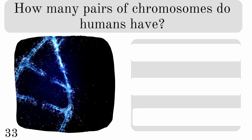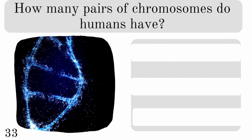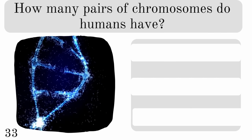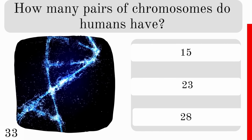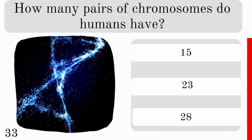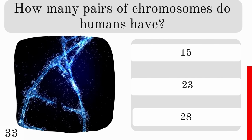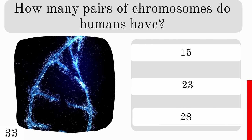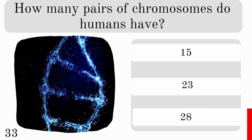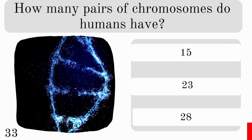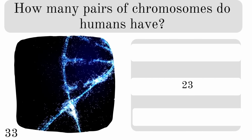How many pairs of chromosomes do humans have? Is it 15, 23 or 28? And the correct answer is 23.